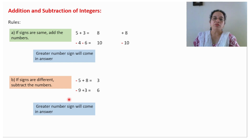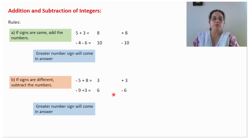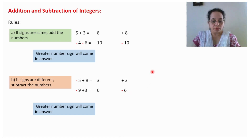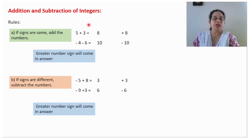Greater number sign will come in the answer. 5 or 8: which is greater? 8 is greater, 8 is positive, so your answer will be positive 3. 9 and 3: which number is greater? 9 is greater, so negative sign is there, answer will be minus 6. So it is very easy — learn in a rhythm: if signs are same, add the number; signs are different, subtract the number; greater number sign will come in the answer.